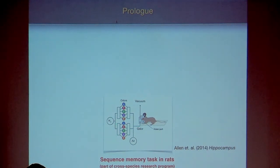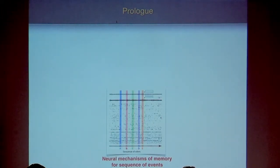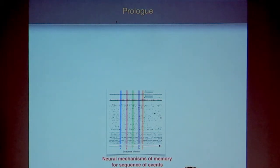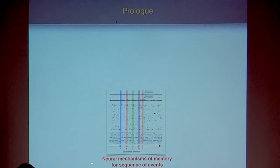In this experiment, rats learn a sequence of odors presented to them. The data collected is multimodal: it involves continuous time series called local field potentials (LFP), shown on top, and discrete time series representing the firing patterns of neurons. These two modalities are used to understand neural mechanisms of memory for sequences of events, where odors A, B, C, D, E are presented in sequence.